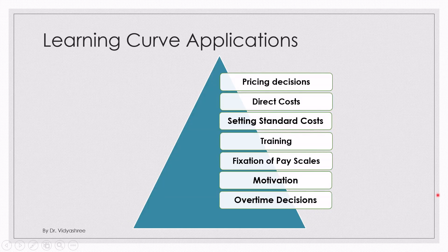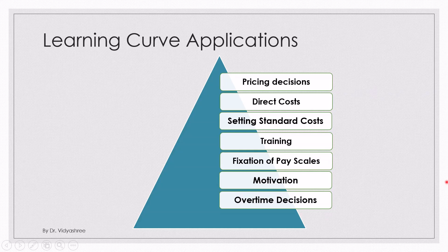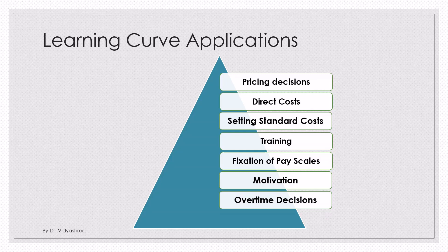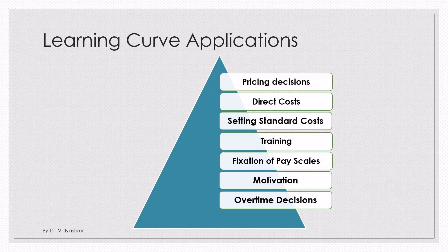Now let's understand learning curve applications — the areas where the learning curve is applied. First is pricing decisions: to fix the price, the learning curve is used, since labor cost is a key aspect of pricing. Next is direct cost and standard cost: labor cost is one of the direct costs, so the learning curve is indirectly used in calculating direct cost, standard cost, and fixing prices.